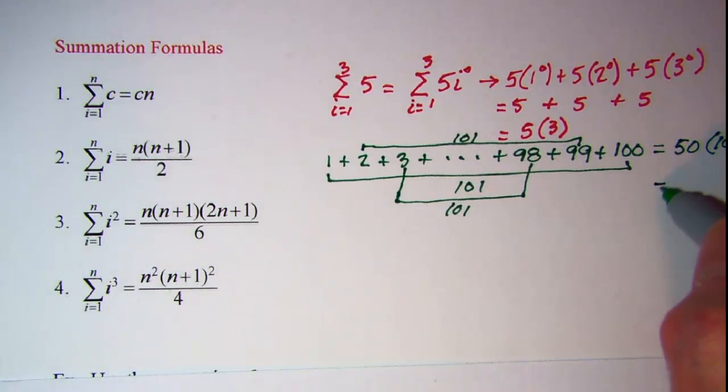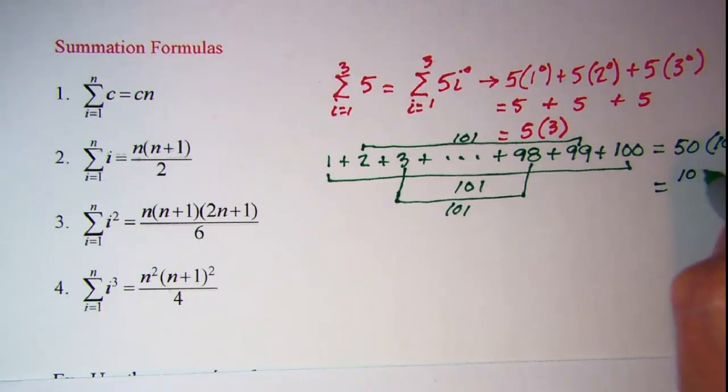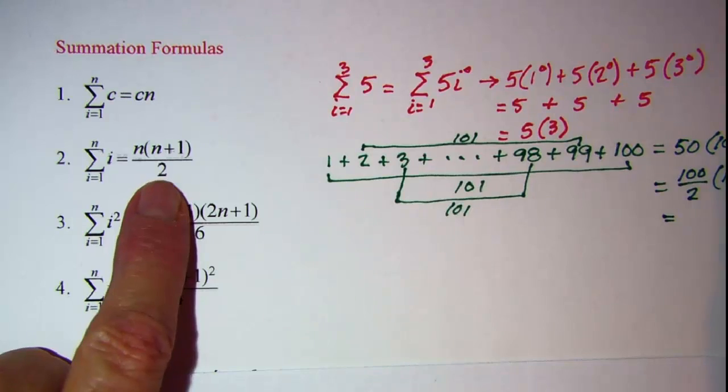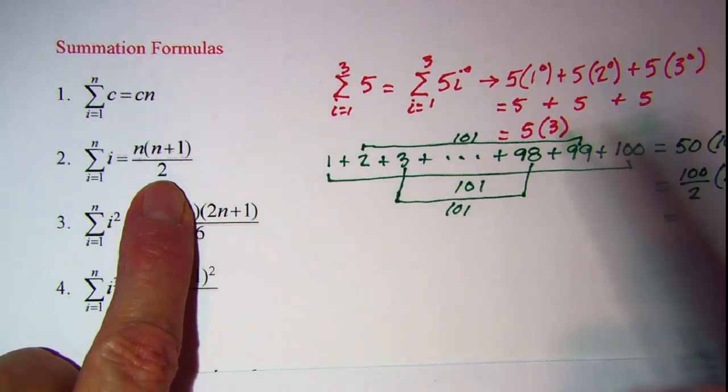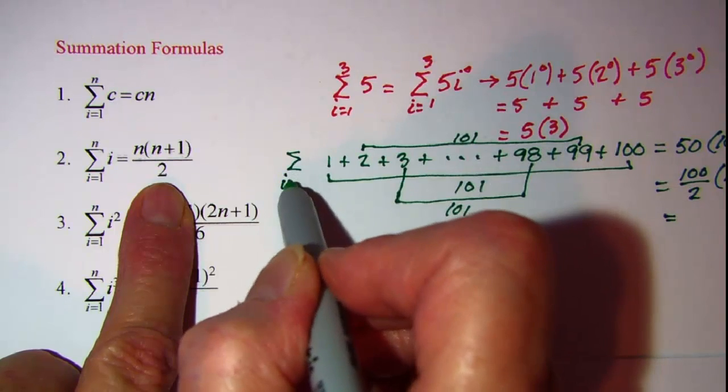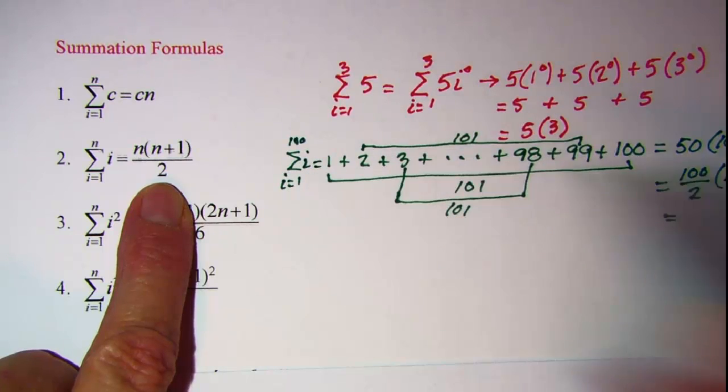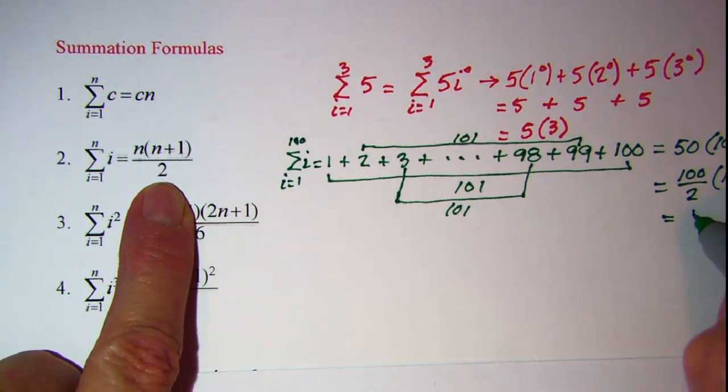So the sum from 1 to 100 would be 50 times 101. So this is our 100 divided by 2 times 101 or according to our formula N which was 100. So N times N plus 1 divided by 2.